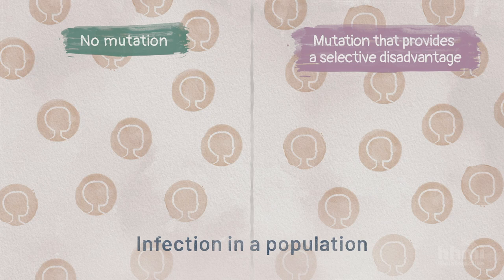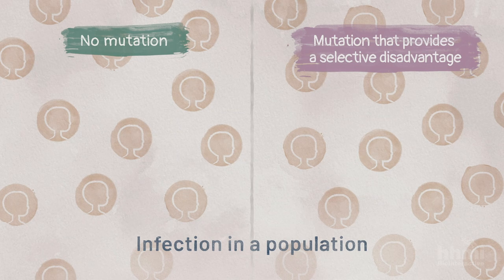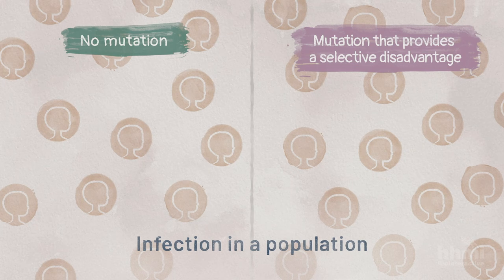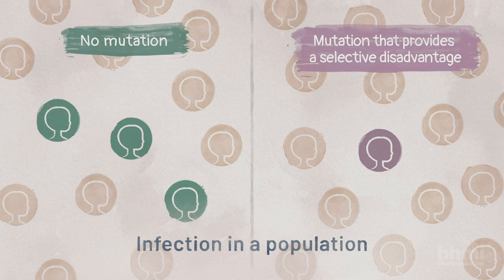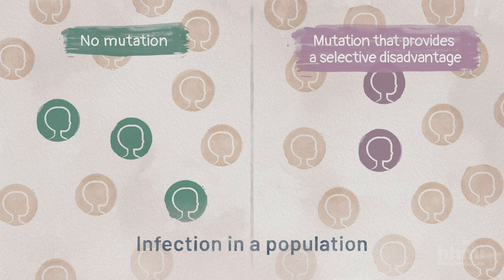Viruses with mutations that make them less effective at replication or infection have a selective disadvantage. These viruses usually become less common in a population over time.